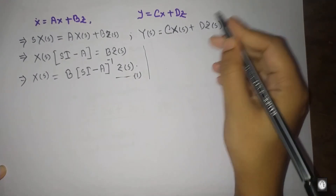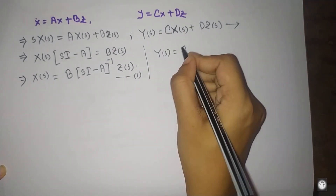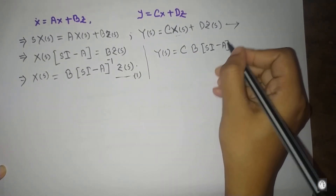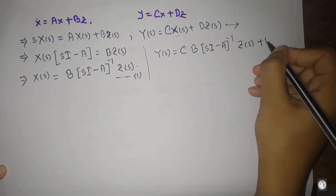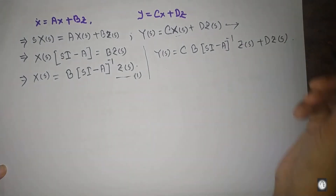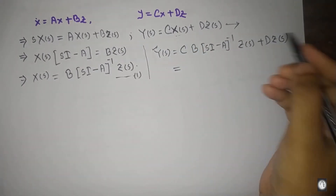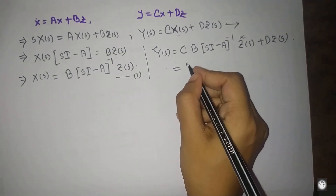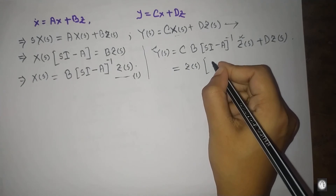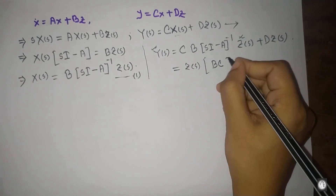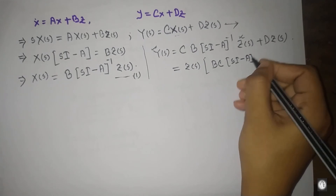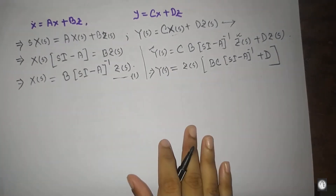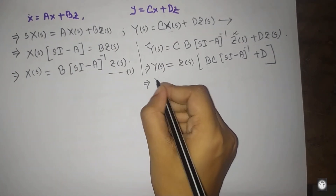Substituting into the output equation y(s) = Cx(s), we get y(s) = C(sI - A)^{-1} Bz(s) + Dz(s). Taking z(s) common, the transfer function becomes C(sI - A)^{-1} B plus D.